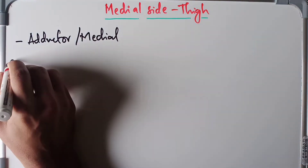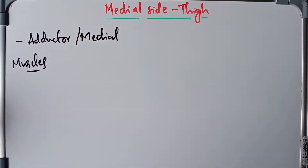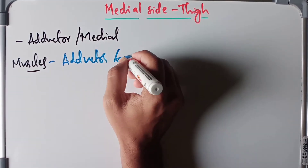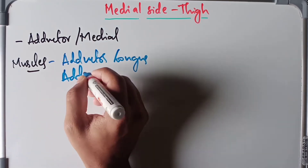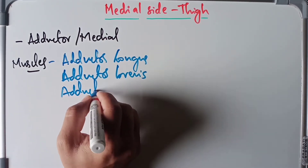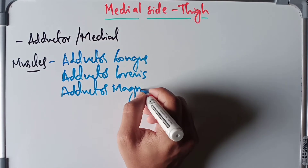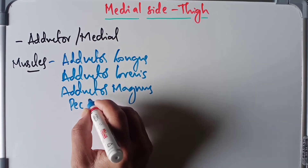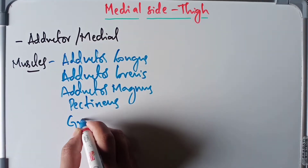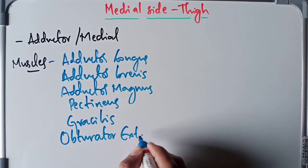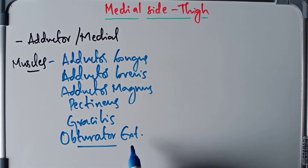When it comes to the muscles, the adductor compartment of the thigh consists of the adductor longus, adductor brevis, adductor magnus, pectineus, gracilis, and obturator externus. Note that there are two different obturator muscles — internus and externus — and it is the obturator externus that belongs to the medial side of the thigh.